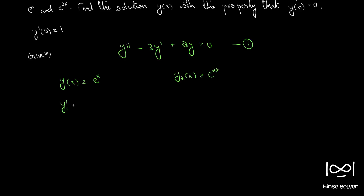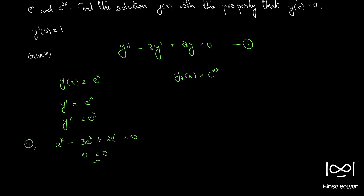For y1: y1' = e^x and y1'' = e^x. Substituting into equation one: e^x - 3e^x + 2e^x = 0, which gives zero equal to zero. The differential equation reduces to an identity when substituted, so y1(x) is a solution to this differential equation.